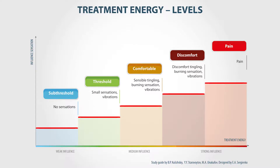The treatment energy can be subjectively divided by three stages: small influence, when we barely feel something; medium influence, when the influence is comfortable; and strong influence, when the influence is a disturbing factor. Different stages influence different body structures and have different physiological effects.